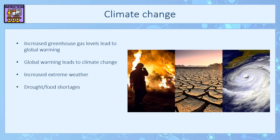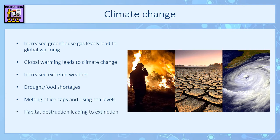We also get increased drought where there isn't any rainfall, which has a knock-on effect in terms of food shortages — a lot of our food requires water from rain to grow. Increased temperature leads to melting of the ice caps, which causes rising sea levels and can cause flooding around lower-lying areas. All of those changes can also lead to habitat destruction, which could ultimately lead to extinction of species.